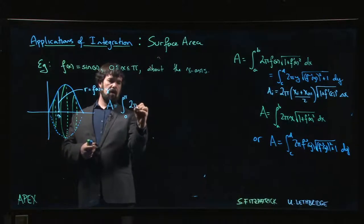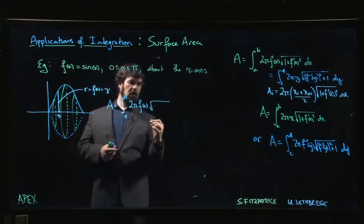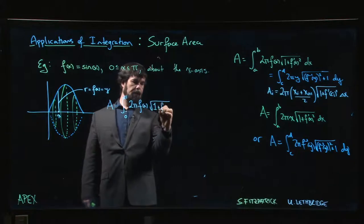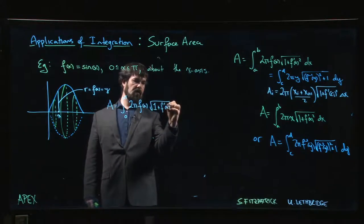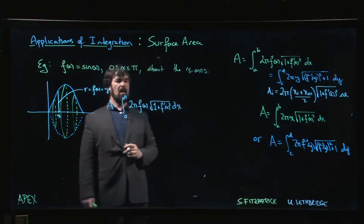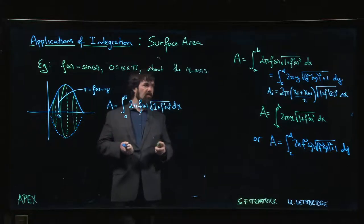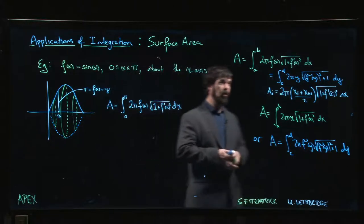2 pi f of x times the arc length element, so 1 plus f prime of x squared times dx. Now one of the things that you might, you can sort of actually generalize both of these, this may be worth pointing out,